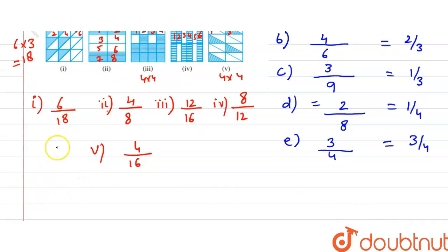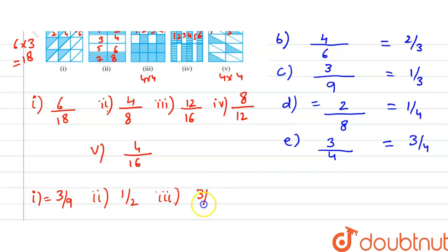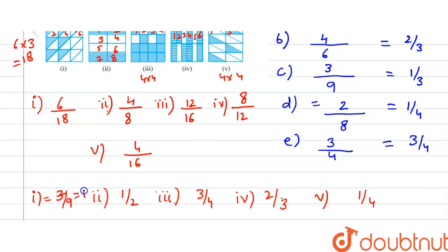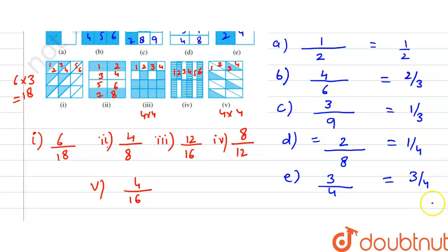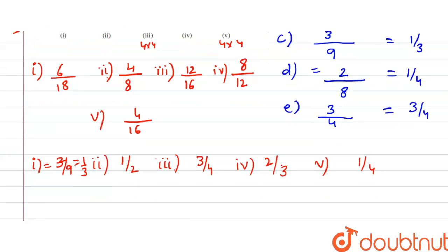By simplification, the first figure gives 6/18 which simplifies to 1/3. You can see that 1/3 matches figure C from the first row, so figure 1 of the second set is equivalent to C.